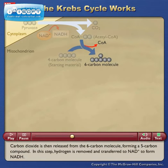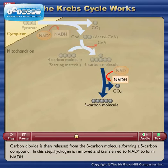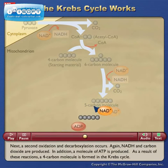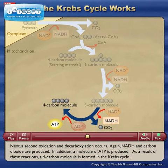Carbon dioxide is then released from the six-carbon molecule, forming a five-carbon compound. In this step, hydrogen is removed and transferred to NAD+ to form NADH. Next, a second oxidation and decarboxylation occurs, again producing NADH and carbon dioxide.